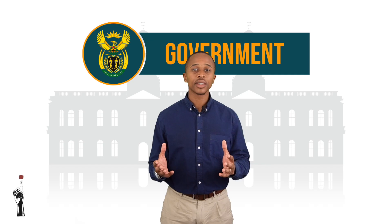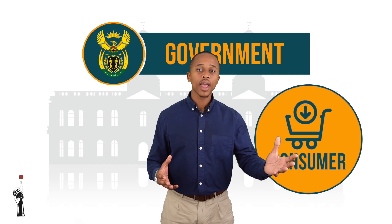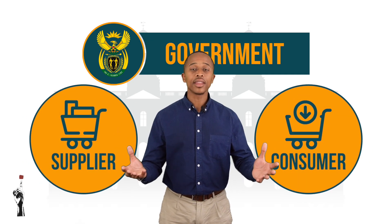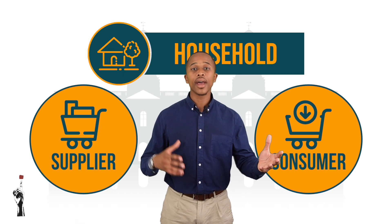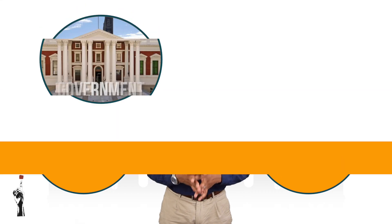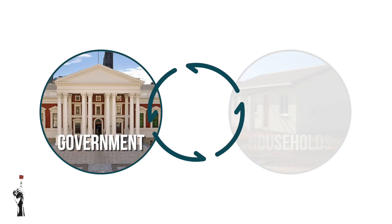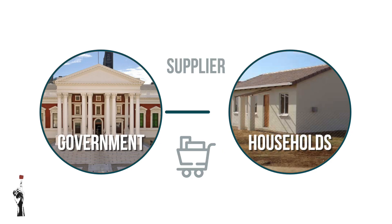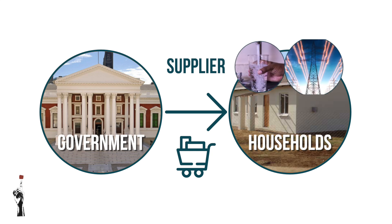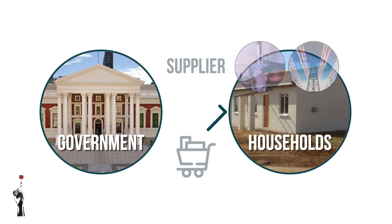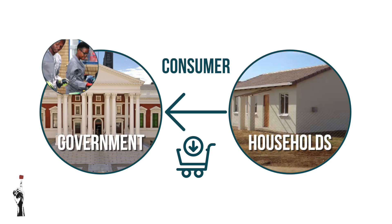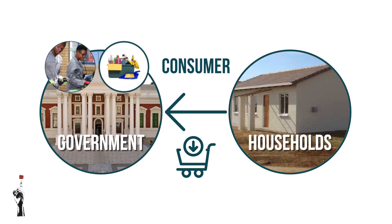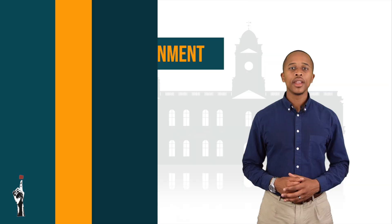Looking at the government as a whole, it is important to realize that the role of the government is sometimes that of a consumer and sometimes a supplier — in the same way that a household is a consumer and supplier. The government is a supplier when it provides services and products to households such as water and electricity, and it is a consumer when it buys labour, goods, and services from households.